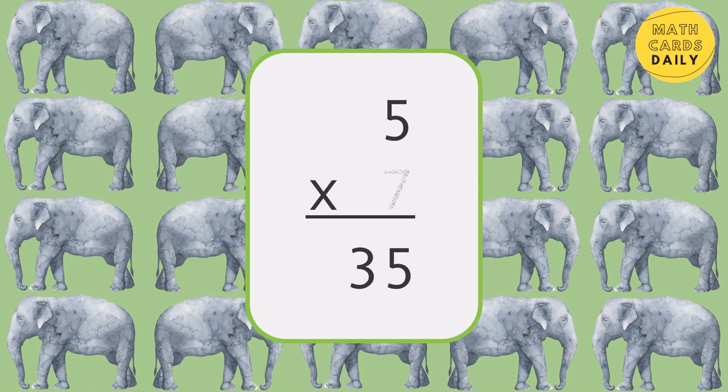5 times 7 is equal to 35. 5 times 5 is equal to 25.